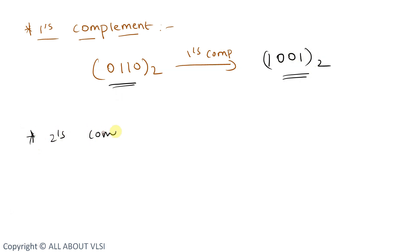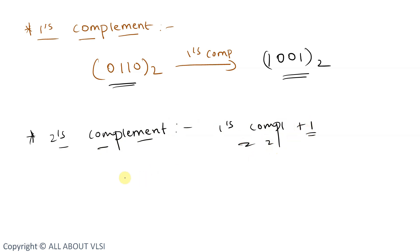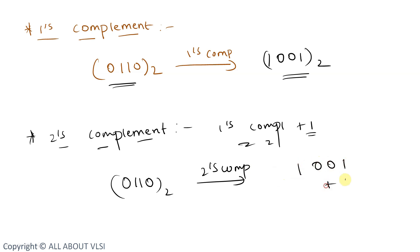For 2's complement: first find the 1's complement, then add 1. So for 0110 base 2, the 1's complement is 1001, and adding 1 gives 1010. So 1010 is the 2's complement of 0110.